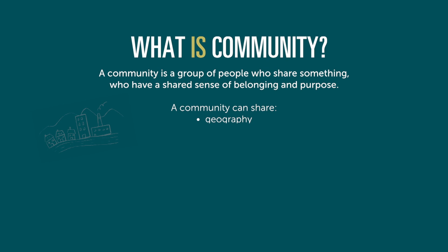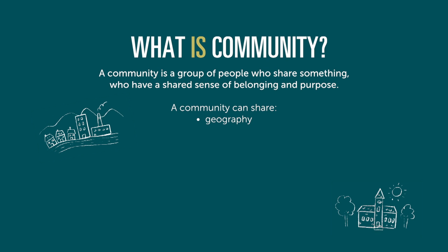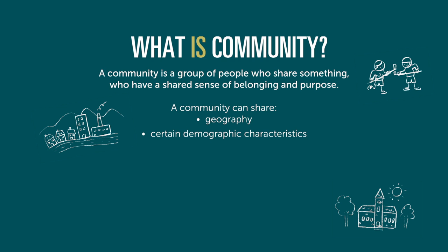A community can share geography — for example, an apartment complex, a street, a neighborhood, a village, or a town. A community might share certain demographic characteristics, for example youth, seniors, language, sex, or race, or a combination of characteristics.